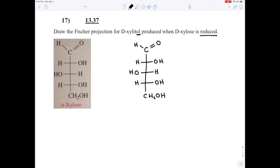When something's reduced, you reduce the number of bonds to oxygen. So usually, this will be the oxygen that has the double bond.